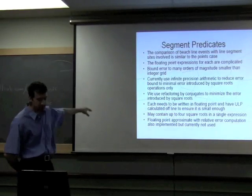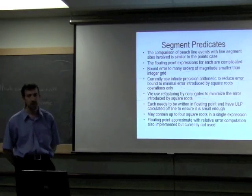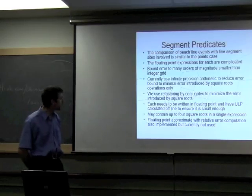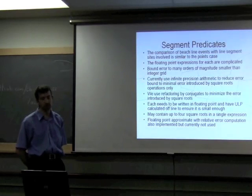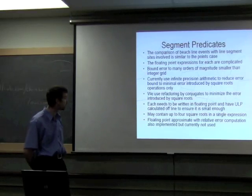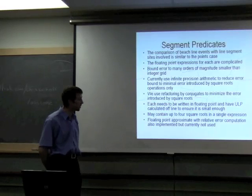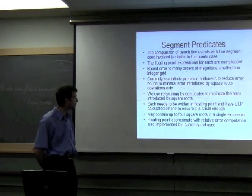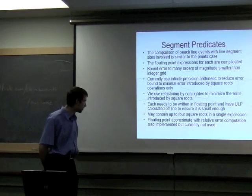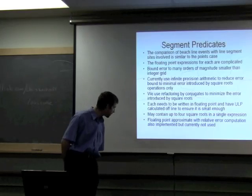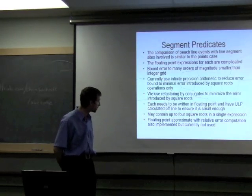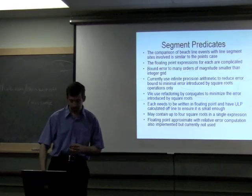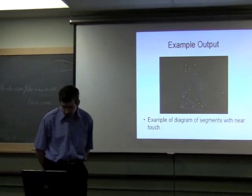The predicates for segments are basically the same but a little more involved. What we're doing currently is using infinite precision all the time for the segments and floating point just for the square roots. Refactoring by conjugates and using infinite precision for the regular arithmetic so we get basically zero relative error there, and minimize the relative error due to the square roots. This gives us a very small error bound. We've implemented the floating point approximation but it's not currently used because we're trying to get the algorithm correct, then we'll swap it and make it faster.